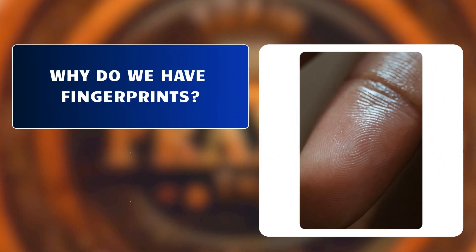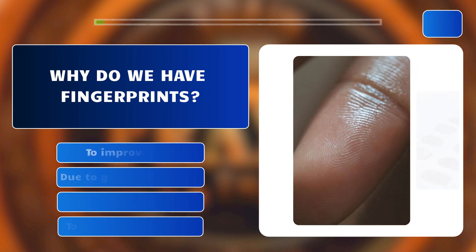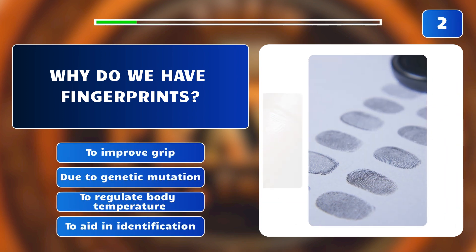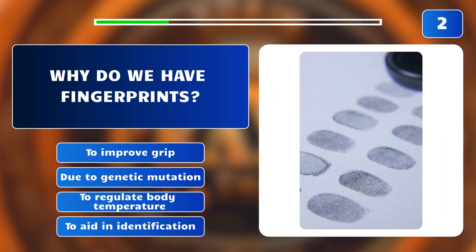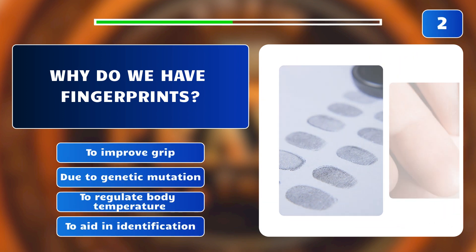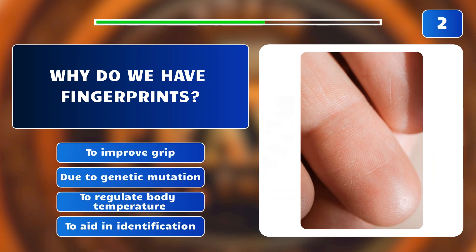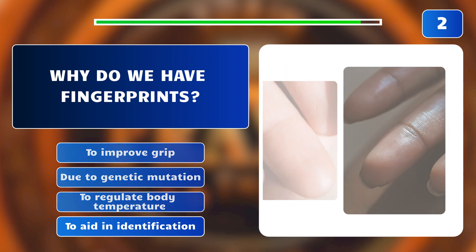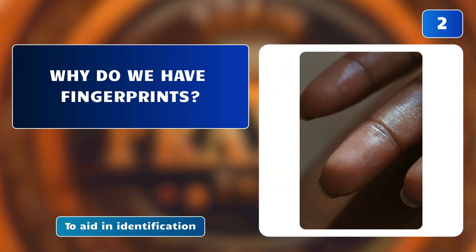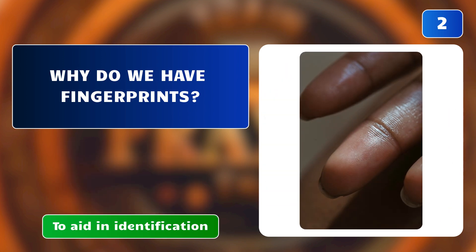Why do we have fingerprints? To improve grip, due to genetic mutation, to regulate body temperature, or to aid in identification? The answer is: to aid in identification.